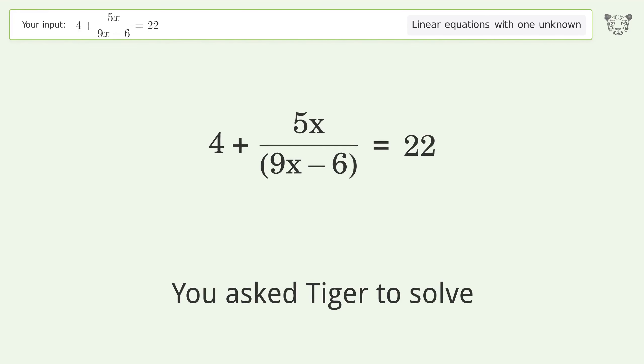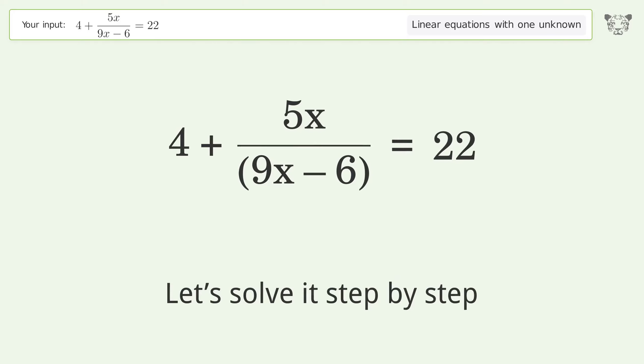You asked Tiger to solve this. It deals with linear equations with one unknown. The final result is x equals 108 over 157. Let's solve it step by step.